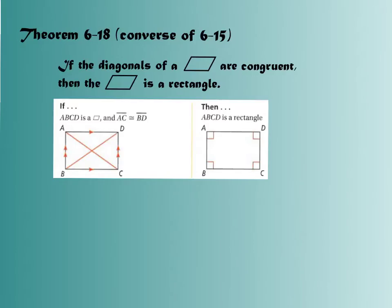And the last theorem that we have is theorem 6-18, which is the converse of 6-15. If the diagonals of a parallelogram are congruent, then the parallelogram must be a rectangle. So if I see that I have congruent diagonals, I know that my parallelogram is a rectangle. And then remember, if we need to find a square, we must have a rectangle and a rhombus. So I must have two of these properties together.